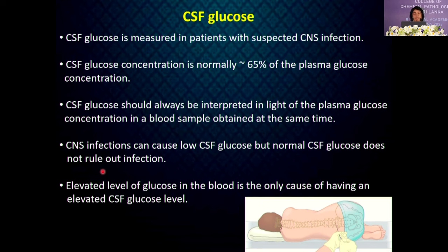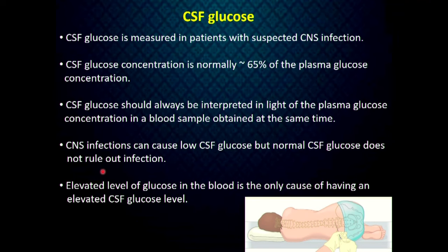CSF glucose is measured in patients with suspected central nervous system infection. CSF glucose is normally 65% of the plasma glucose concentration and should always be interpreted alongside a plasma glucose sample obtained at the same time. CNS infection can cause low CSF glucose, but a normal CSF glucose does not rule out infection. Elevated CSF glucose is caused only by elevated plasma blood glucose.